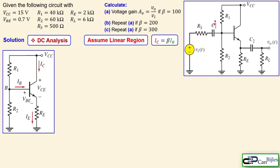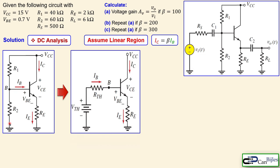For the DC circuit we assume that our capacitors are perfectly open. That means RS and VI is disconnected and also the load RL is disconnected, so we only have the core part of the circuit. The base node will be analyzed using the Thevenin equivalent circuit, converting it into the Thevenin resistance and Thevenin voltage.